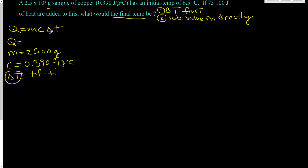Delta T is temperature final minus temperature initial. We are asked for temperature final — that's our unknown — and we are given temperature initial. So the final temperature is going to be x, because that's what we're looking for. We know the initial temperature is 6.5 degrees Celsius, given in the original problem. And the heat energy given is 75,100 joules.